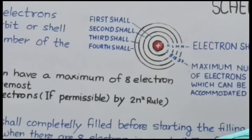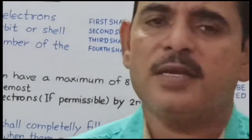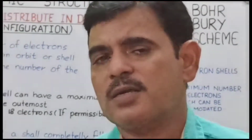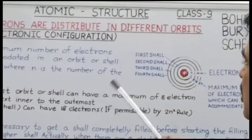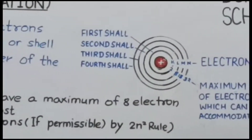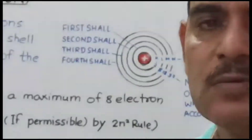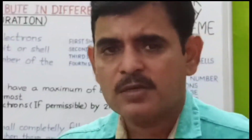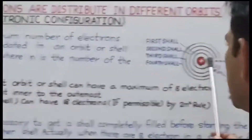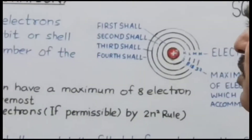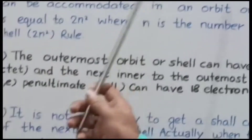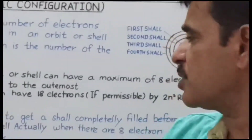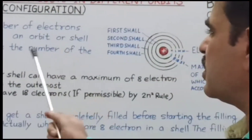n बराबर shell number हो गया और 2n² से उस shell में जितने भी electrons आ सकते हैं, उनकी maximum संख्या मिल जाती है। इस formula से सभी orbits के maximum number of electrons निकाले जा सकते हैं।